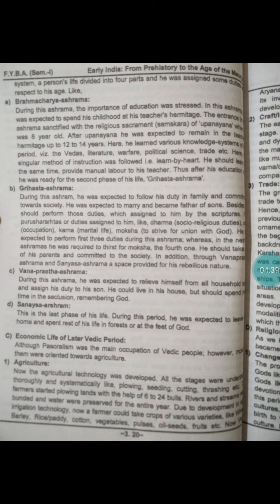The entrance into this Ashrama was sanctified with the religious ceremony of Upanayana when he was eight years old. After Upanayana, he was expected to remain in the teacher's hermitage for up to 12 to 14 years. Here he learned various knowledge systems of this period — the Vedas, literature, warfare, political science, trade, etc.